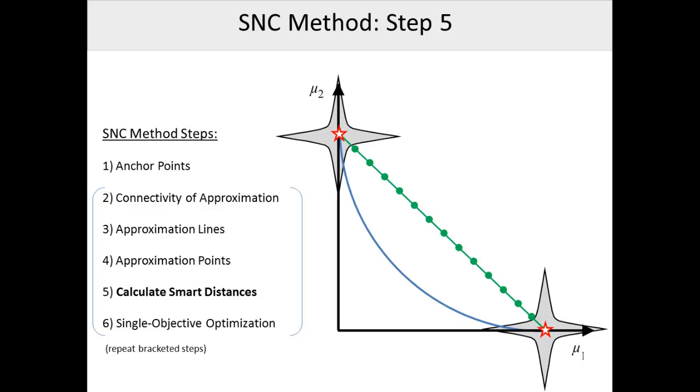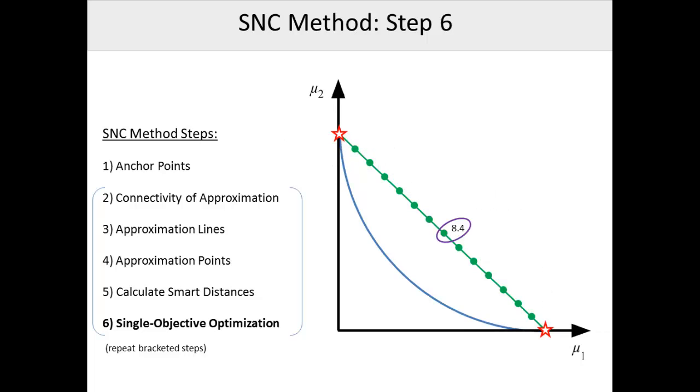Now, instead of performing a single objective optimization for every one of these points, like we would do in the traditional approach using the normal constraint method, we use our smart distance formula to calculate which region of our approximated Pareto frontier has the greatest likelihood of yielding a new point that is not in any existing PIT regions. We calculate the smart distances of every approximation point to the known Pareto points and select the one with the maximum smart distance value from the nearest known Pareto point. Through that point, we construct a linear constraint that is normal to the line connecting the anchor points. This limits the feasible design space to a particular region, and now a single objective optimization with respect to Mu2 results in a new smart Pareto point in that region.